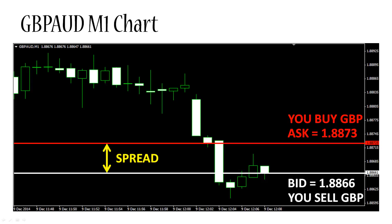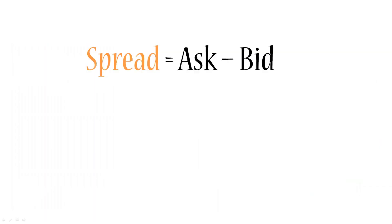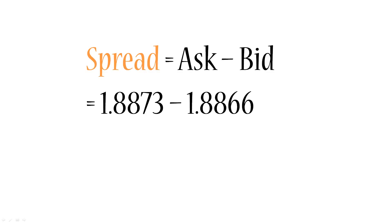Let's calculate the spread for this particular example — the British pound / Australian dollar currency pair — when the prices were as illustrated on this chart. The spread is the ask minus the bid: 1.8873 minus 1.8866, which equals 0.0007. That's less than one Australian cent.